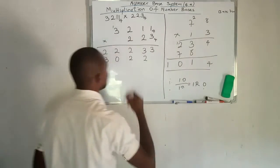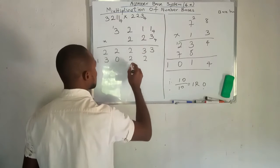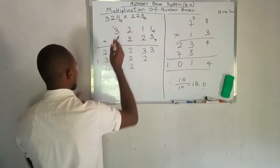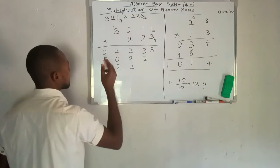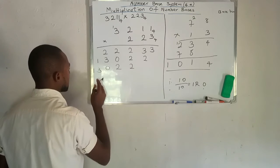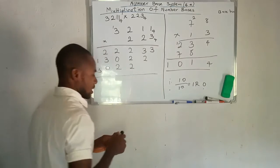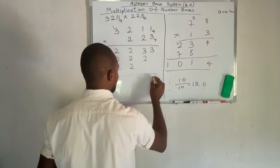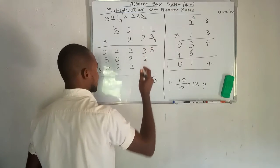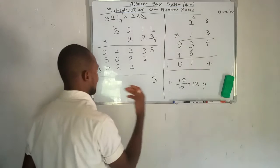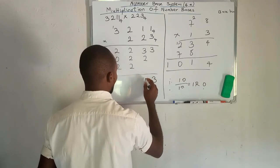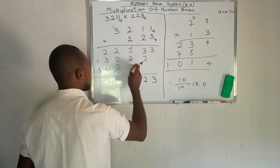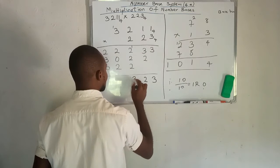Now we multiply with the next digit, which is 2. We get 2 times 2 is 4, and 4 divided by 4 gives 1 remainder 0. Take 1 to the next place. We have 2 times 3 is 6, and 6 plus 1 is 7. So 7 divided by 4 gives 1 remainder 3. Now we add the partial products together. We have 3 here, and then 3 plus 2 is 5. But 5 is bigger than numbers in base 4, so we divide by 4, giving 1 remainder 2. Write 2 here and take 1 to the next place. Then we have 2 plus 1 is 3, and 3 plus 2 is 5, plus 2 is 7. And 7 divided by 4 gives 1 remainder 3.